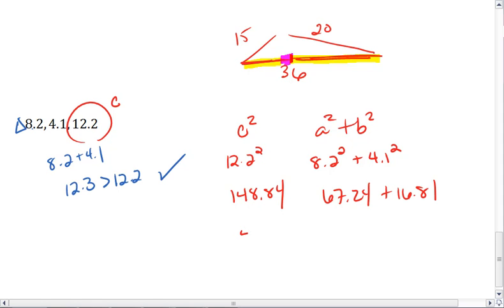We add our right side together, 67.24 plus 16.81, we get 84.05. Since C squared is greater than A squared plus B squared, we know we now have an obtuse triangle.